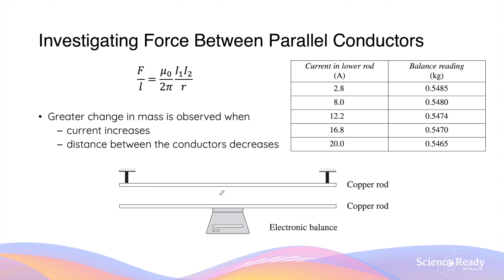As current changes, what we expect to see is that the mass reading on the balance should also change. Here's an example: the current flowing through the top conductor is fixed, while the current in the lower conductor is increased from 2.8 amps all the way to 20 amps. And as you can see, the balance reading will decrease. This tells us that as the force between two conductors is increasing, the mass reading is decreasing. So that means the two currents will be flowing in the same direction, causing the force to be attractive. And since the force is attractive, the bottom copper rod will experience an upward force towards the top conductor. As the current in the bottom conductor increases, the force will also become stronger, causing the mass reading to decrease even more.